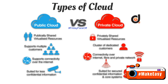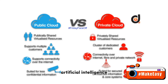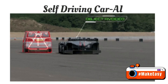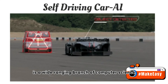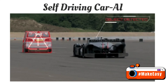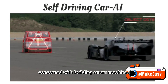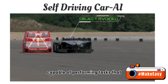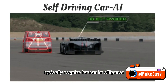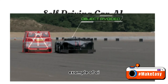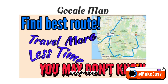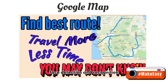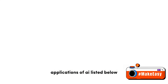The next contemporary technology is artificial intelligence (AI). Artificial intelligence is a wide-ranging branch of computer science concerned with building smart machines capable of performing tasks that typically require human intelligence. Examples of AI include Google Maps, face detection and recognition, autocorrect, and chatbots.